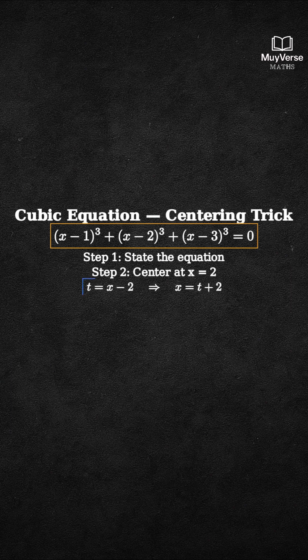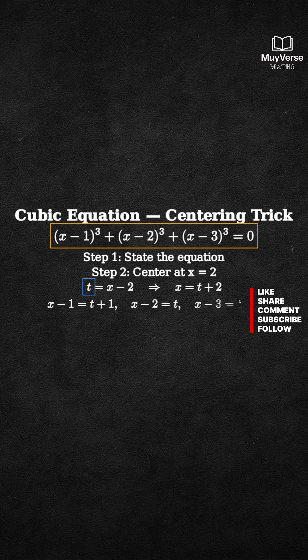That turns the three shifts into t plus 1, t, and t minus 1. Substituting gives the new equation.